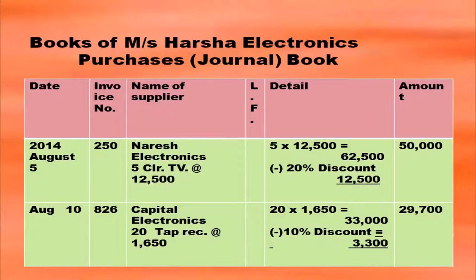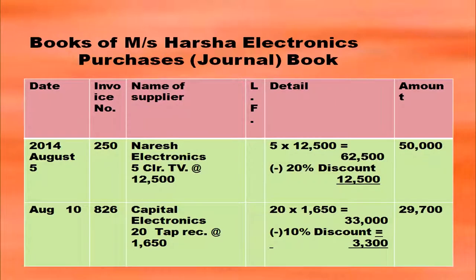You have to write as a heading in whose book you are opening the purchases book: Books of Messrs. Harsha Electronics. Then you have to write purchases journal or purchases book. Draw the format with date column, invoice number column, name of supplier column, ledger folio, details and amount. Date column will start with the year, then month and date. 2014, August 5th. Invoice number 250 in that column.